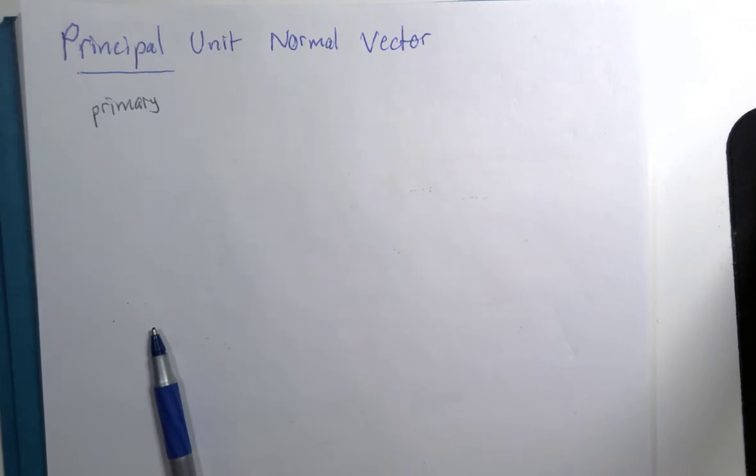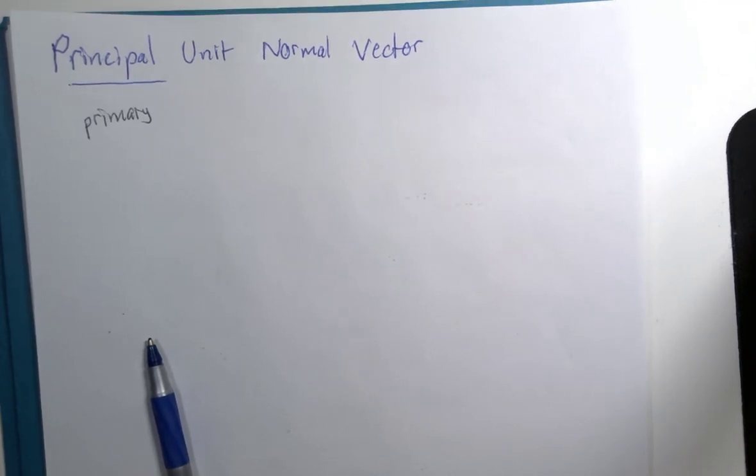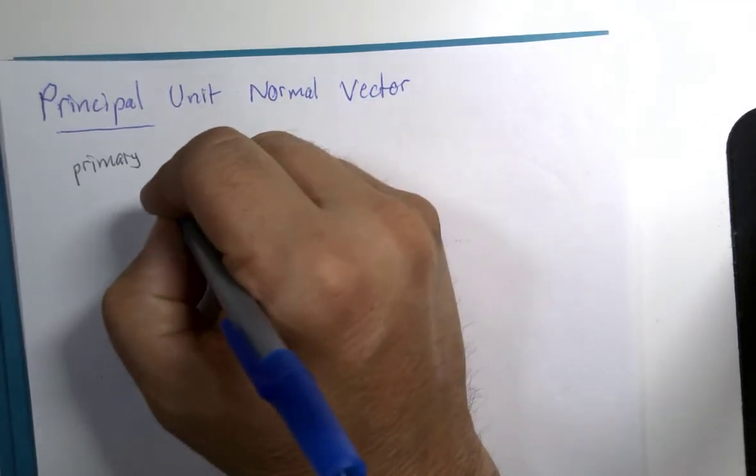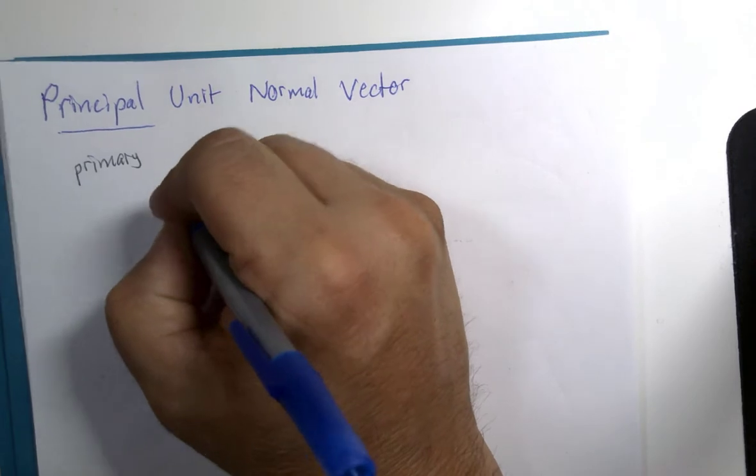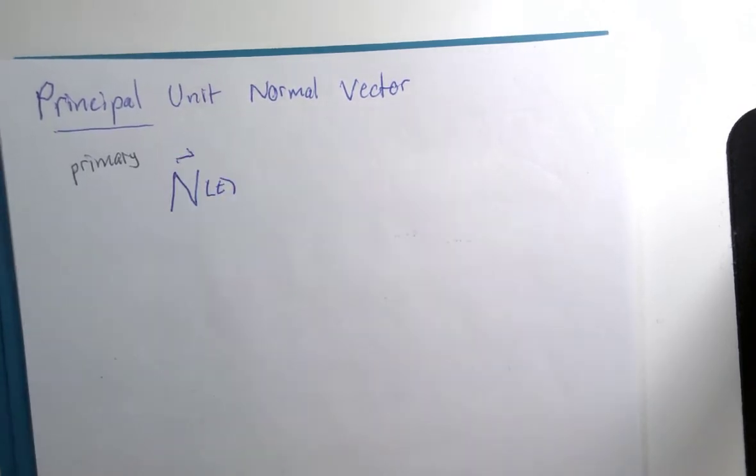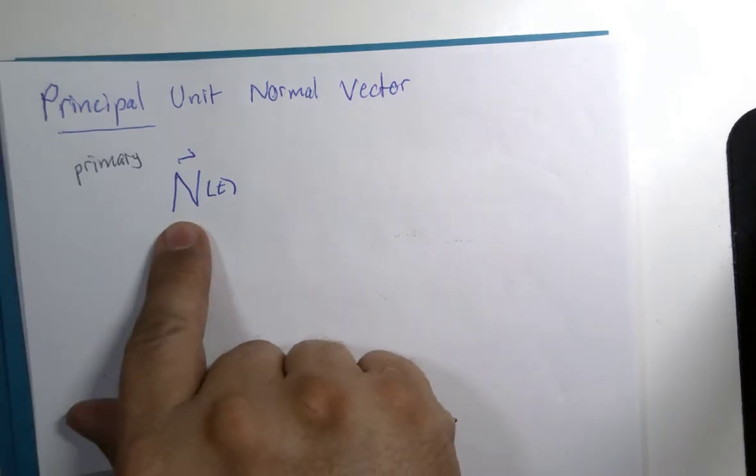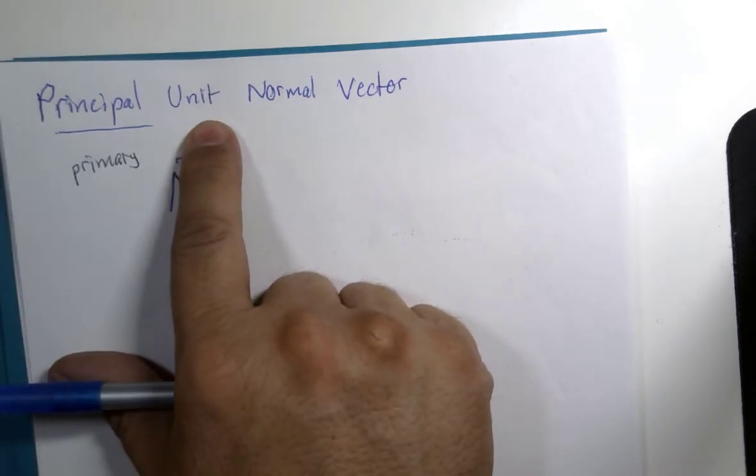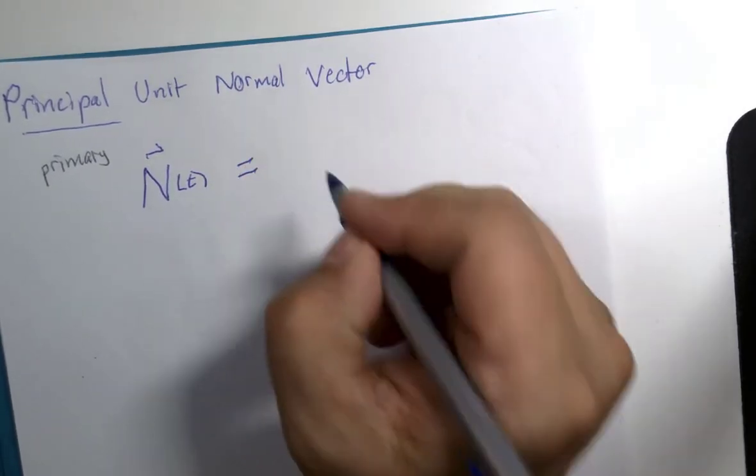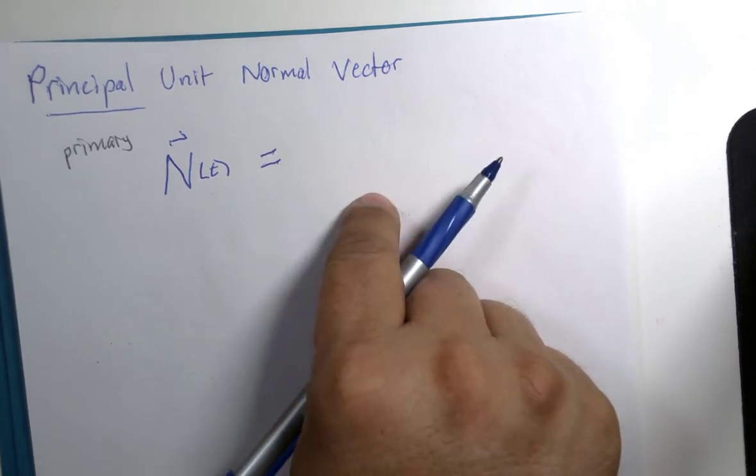The definition is pretty straightforward. Why it works is definitely not straightforward, but we will work through some of those pieces in the coming segments. First of all, notation: capital N of T, the primary normal vector that is one unit in length, so it's a magnitude of one.